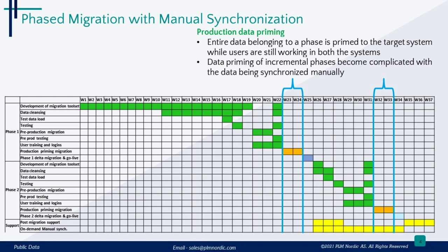As we move on to the next step in our phased migration, we kick things off with a process called data priming. Here, we meticulously prepare and shift all the data of a particular phase to the target system, while people continue to use both the source and target systems. However, manually synced data adds a bit of complexity both in terms of execution and tracking.